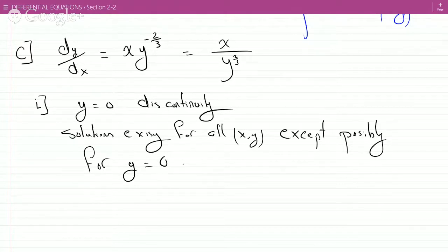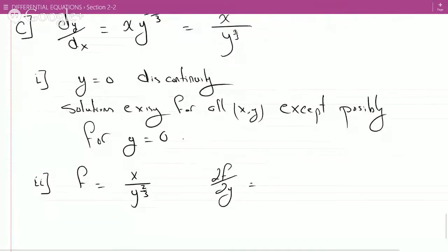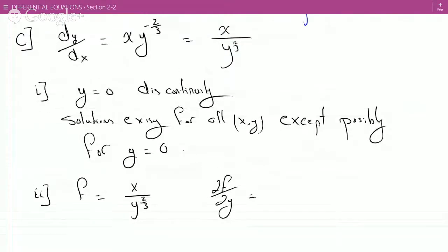Where do they exist and where are they unique? So for this, we can call f our x over y to the two-thirds, and we can find partial f partial y, which we differentiate with respect to y. So we get minus two-thirds. You hold x fixed.